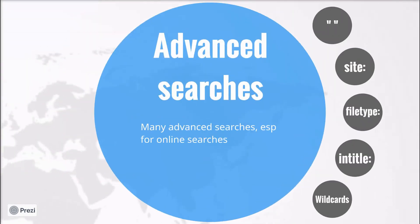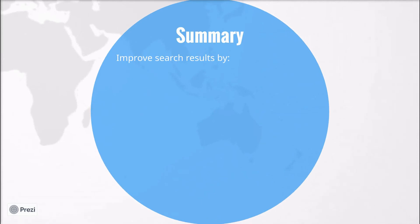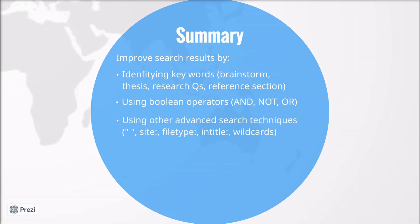So that's a short introduction about how to search for information. Next time you need to search for information, remember to first identify keywords by brainstorming, looking at your thesis statement or your research questions, or your reference section as you build it up — especially titles or authors. Secondly, think about using Boolean operators: AND, NOT and OR. And finally, try to use some advanced search techniques: quotation marks, site:, filetype:, intitle:, and wildcards. For more information please visit eapfoundation.com/writing/research/search.